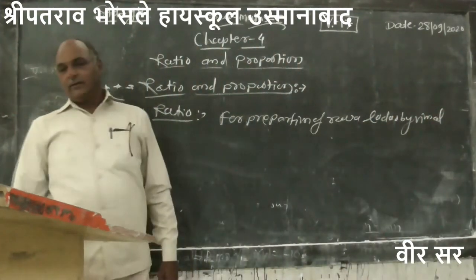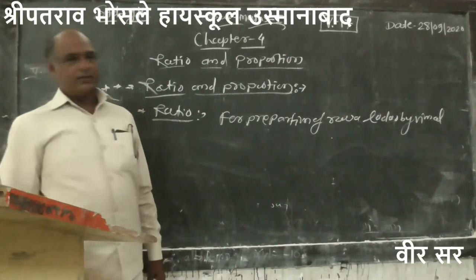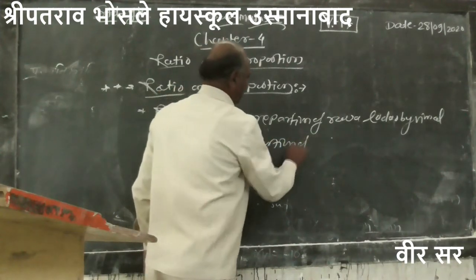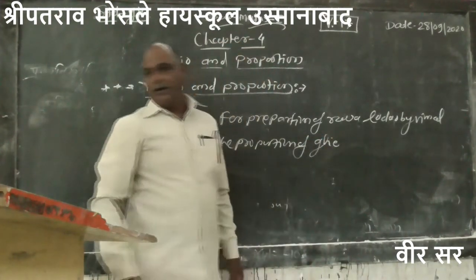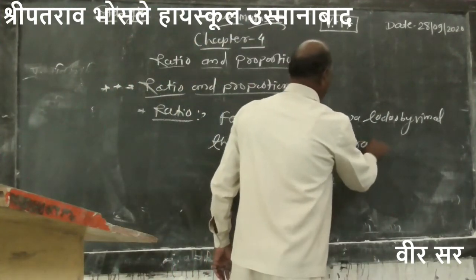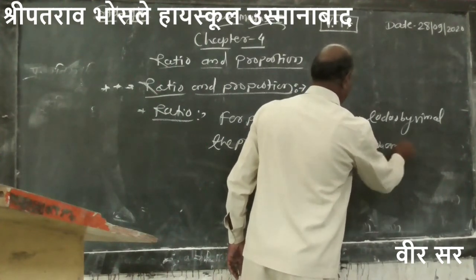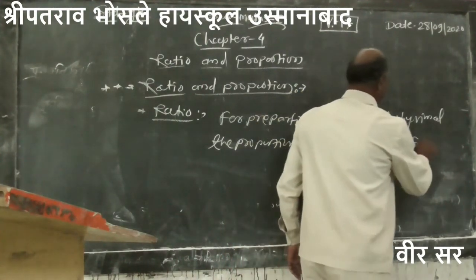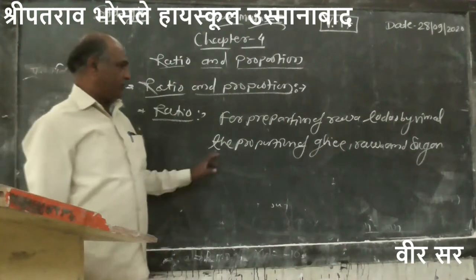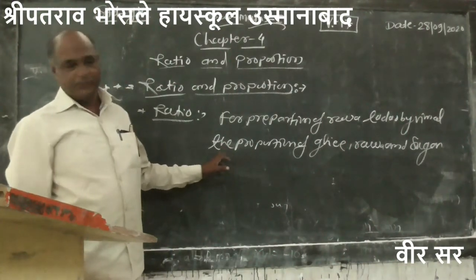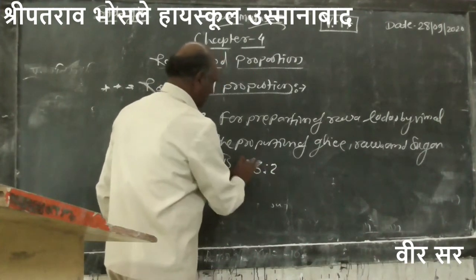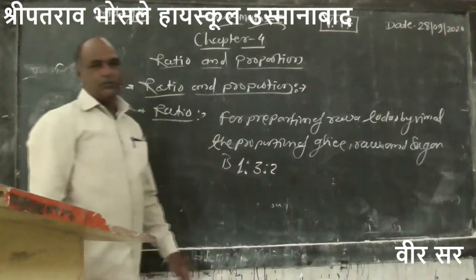What will be the proportion of Ghee, Rava and Sugar? Here Ghee, Rava and Sugar are given. This proportion is in the form where it is 1 is to 3 is to 2. This proportion is 1 is to 3 is to 2.